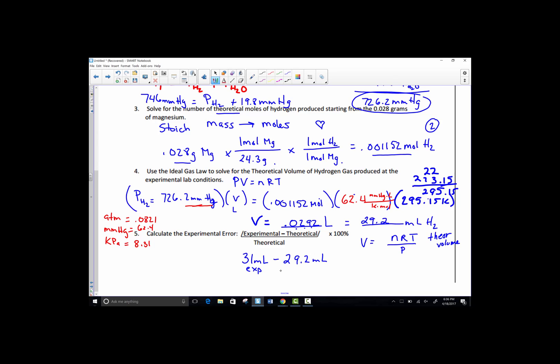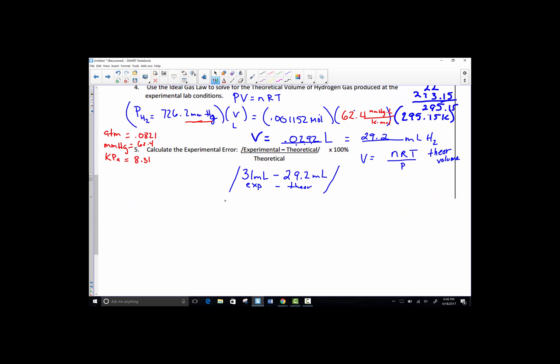This sits inside of an absolute value sign. So subtract them either direction. Just make sure it ends up positive. Divide that by, divide the difference. So make sure you hit equal. Divide that by your theoretical and express it as a percent. So this is telling you how well your experiment worked. 31 minus 29.2 equals 1.8 divided by 29.2 equals times 100. This experiment ended up with a 6.16 percent error. Pretty darn good. I hope yours comes out equally well.